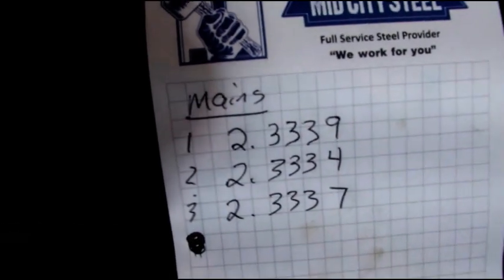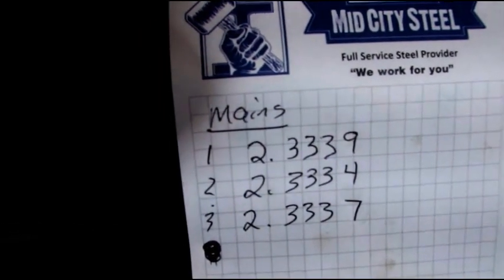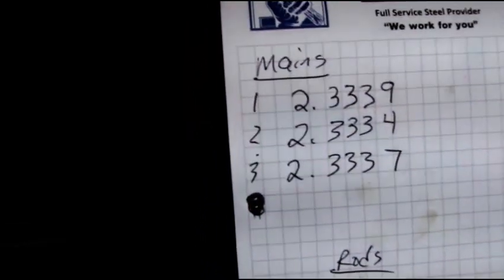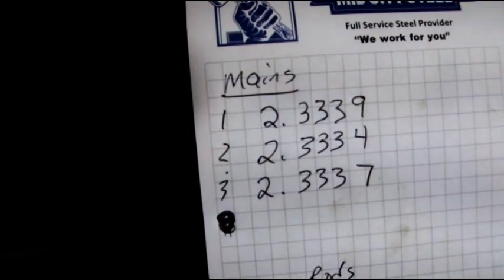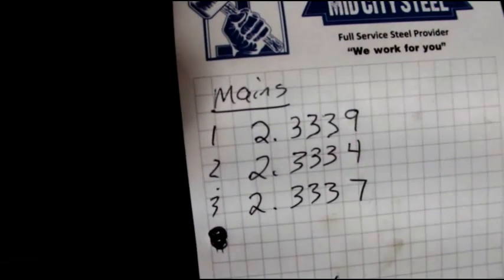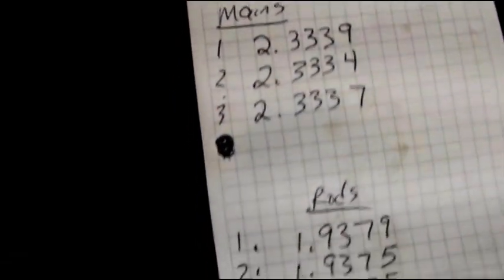Okay, there's the mains. Two-point-three-three-nine, two-point-three-three-four, two-point-three-three-seven. The spec is two-three-three-one to two-three-three-four-one. So well within that.